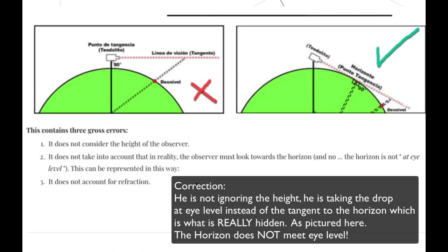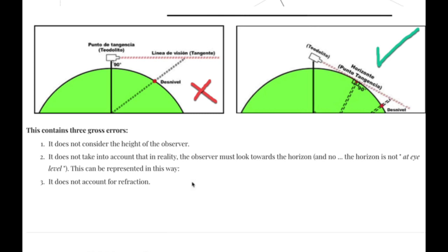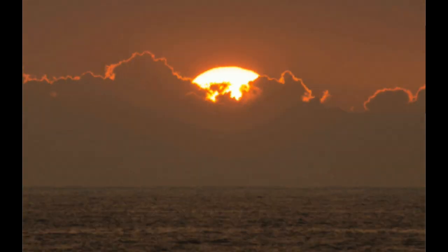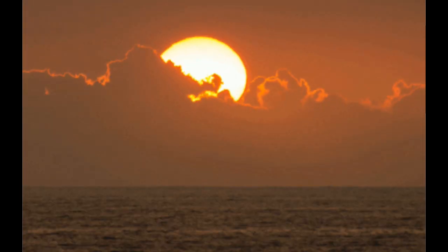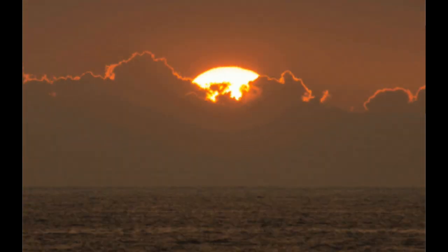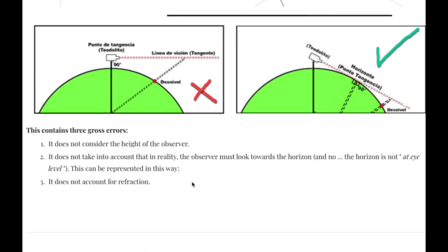So here is the big mistake that flat-earthers can't seem to grasp. The horizon does not meet eye level. It just doesn't. When you're looking out at the horizon on, say, a sunset, you are looking down. You are not looking at eye level. And how much you're looking down depends on a lot of variables, including your height and where your eye level is, but that is not eye level. Eye level would be straight across, as this image shows here.